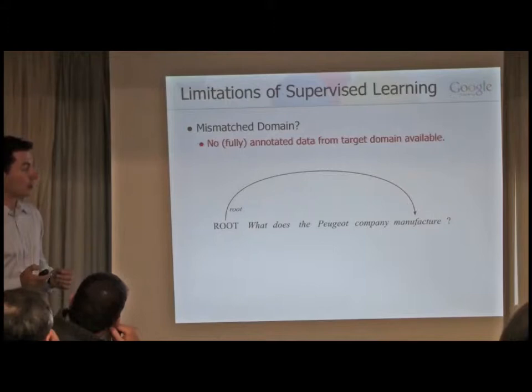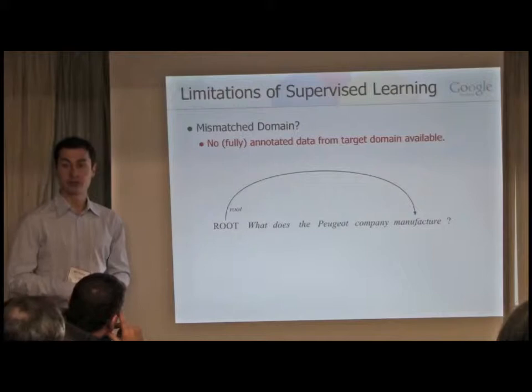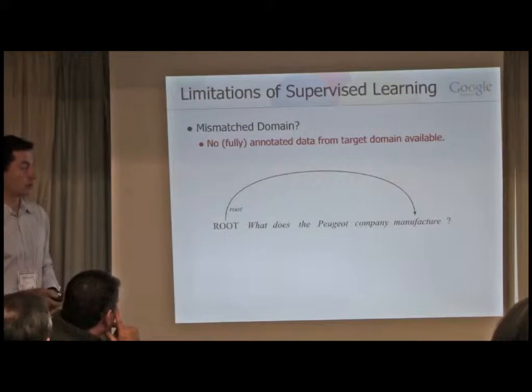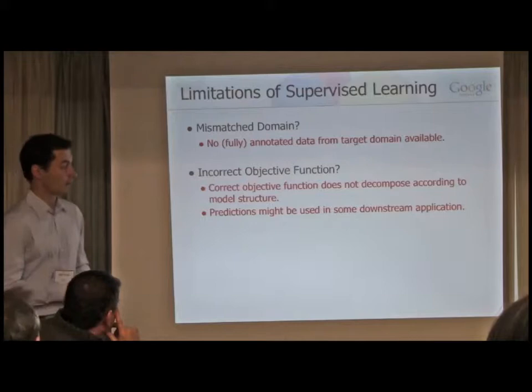But it is realistic to get partial annotations. Even without a linguistics background, if I ask you what the main verb of a question is, you'll probably be able to point out that 'manufacture' is the main verb. We want to leverage those partial annotations to adapt to new domains.